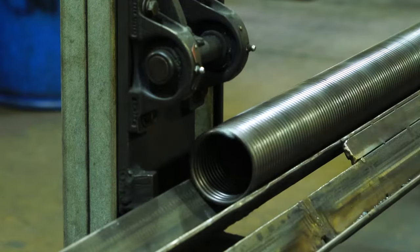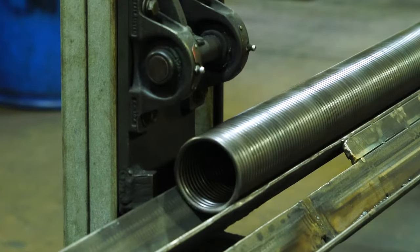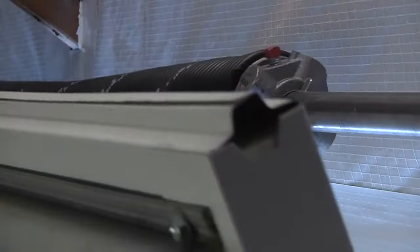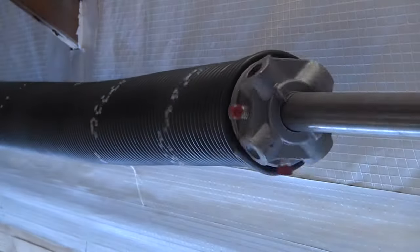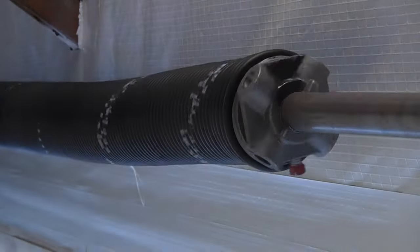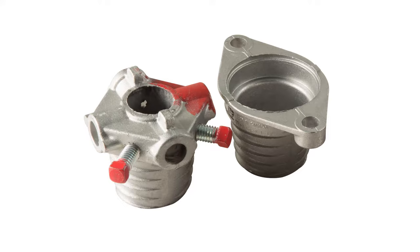Spring wind refers to the direction the wire is coiled to make the spring. The wind is helpful to know the direction the spring will uncoil as the door moves up and down. Cones will have threads that match the spring's wind.